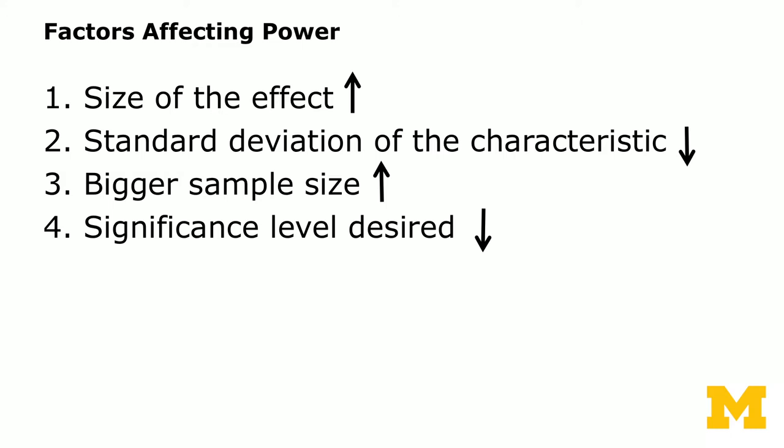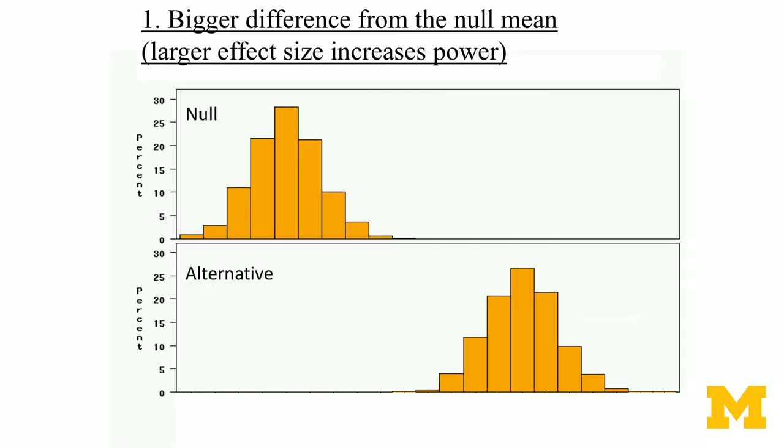The last factor is the significance level desired. If you have a lower significance level — meaning lower type 1 and type 2 error rate — then the lower your power will be. So those are the factors affecting your power.